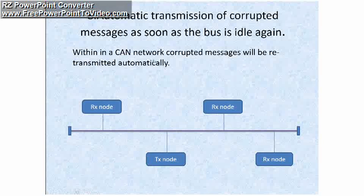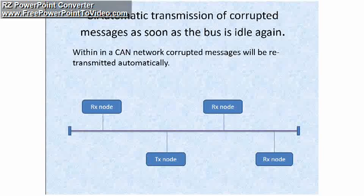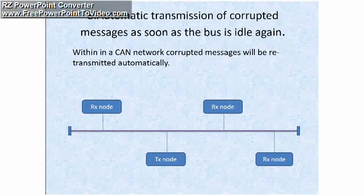The next property of the CAN protocol is automatic retransmission of corrupted messages. As soon as the bus is idle again within a CAN network, corrupted messages will be retransmitted automatically. In the previous property we saw that any node in a CAN network can detect an error in the transmitted message and inform about it.